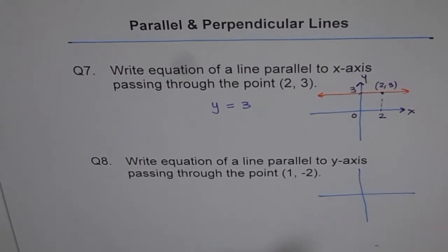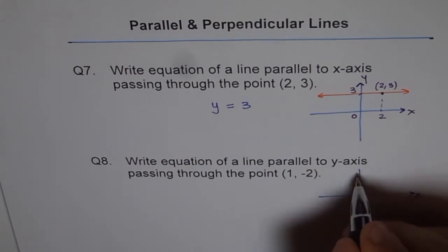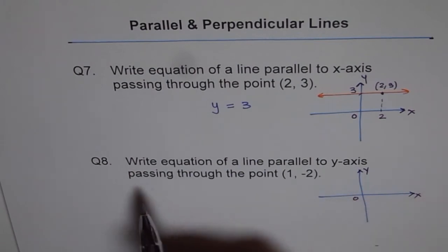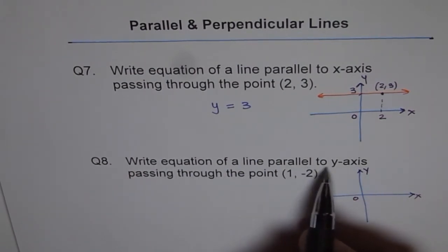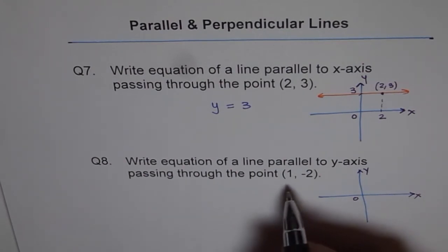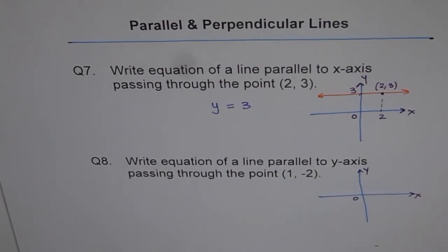So, here also, try to sketch. This time, it's a good reminder for me. I'm writing x and y, but yes, I miss it most of the time. But you don't. Now it says, write equation of a line parallel to y-axis. That is my y-axis. And passing through (1, -2). See, 1 and -2 is kind of somewhere here, right?